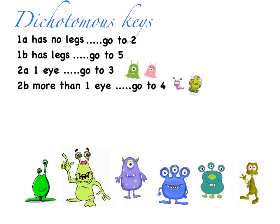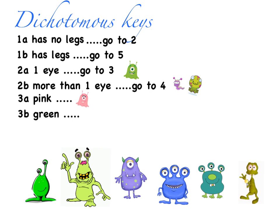At three, I need to distinguish between those that have one eye. Normally I would give the name of the species here, but I don't want to come up with names for these, so I'll just put their picture here. If it's pink, we've uniquely identified that species. If it's green, we've identified our other species.